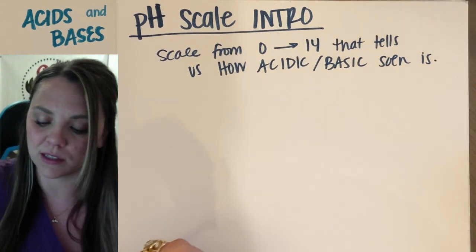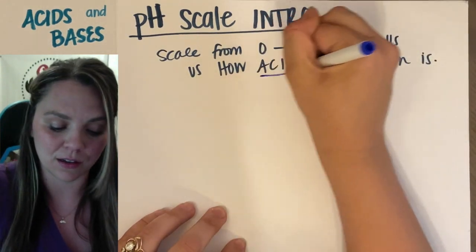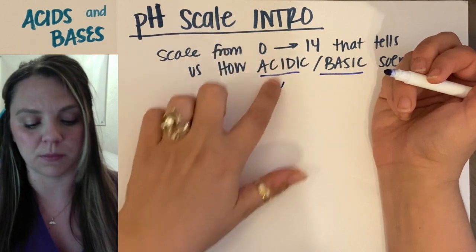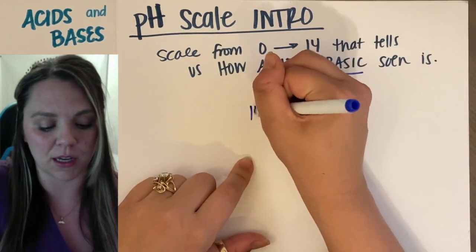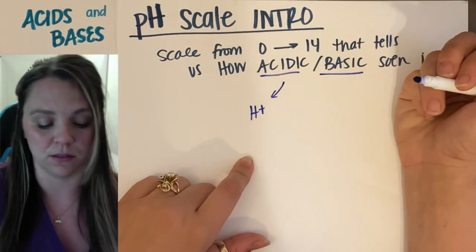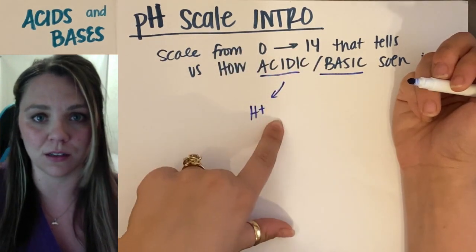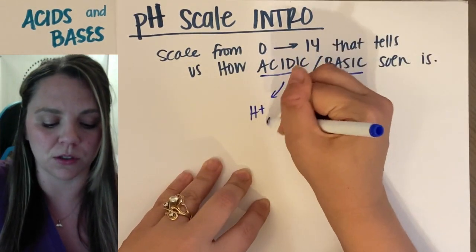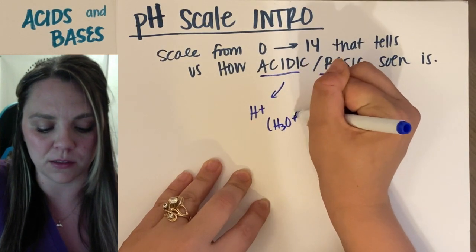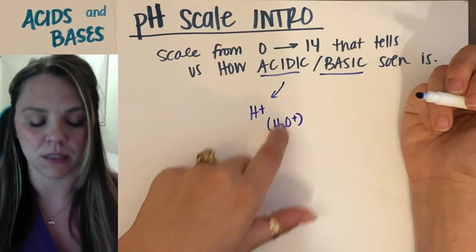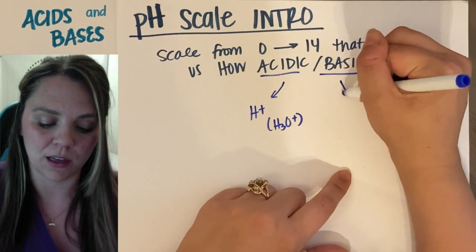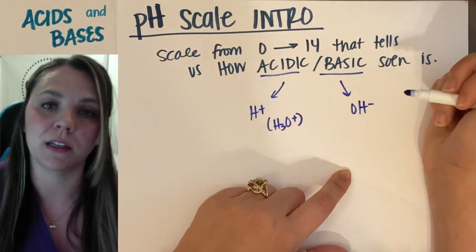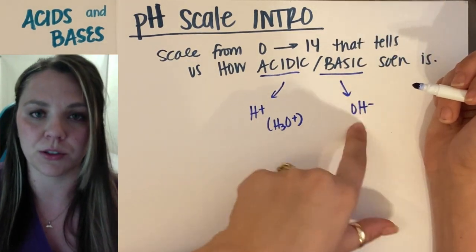And the way that we can tell how acidic or basic something is is based off of whether or not they would have some H+ ions in the solution, which would make it acidic. And really, they never stay as H+ in water, so H+ turns into H3O+, turns into hydronium. Or if it's basic, it would have more OH- particles in the solution, so more hydroxide.